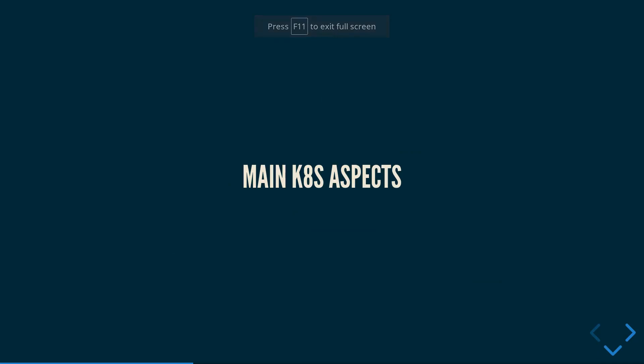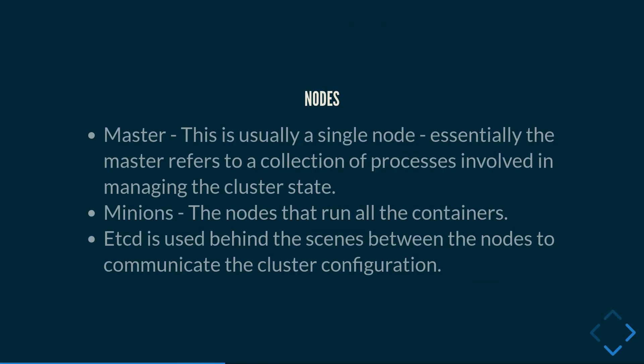So what are the main aspects of Kubernetes? To begin with, we start with the nodes — the actual hardware or virtual machines that your containers run on, as well as where Kubernetes itself runs. We have the master node, which is usually a single node and refers to a collection of processes involved in managing the cluster state — the things behind the scenes that run your containers.